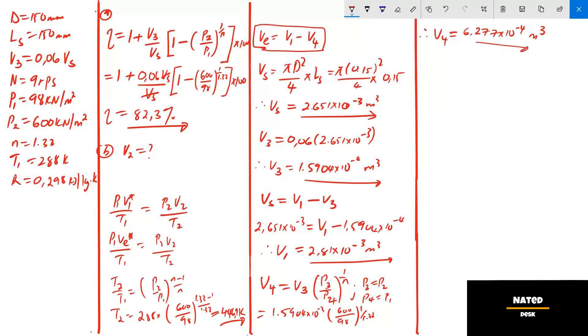Now we have calculated V4, let's calculate VE. VE equals V1 which we calculated as 2.81 times 10 to the exponent negative 3 minus 6.277 times 10 to the power negative 4. Then VE equals 2.182 times 10 to the power negative 3. Since they wanted V2 in cubic meter per second as per question, let's multiply VE by 9 rev per second. Then VE is 0.0196 cubic meter per second.